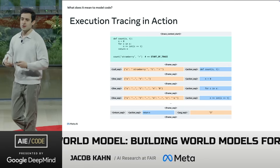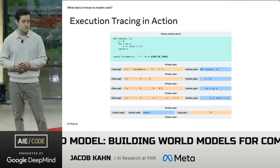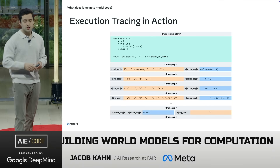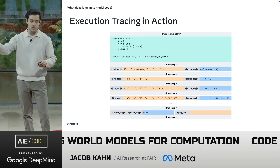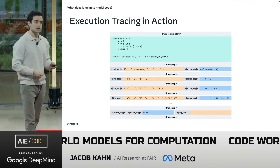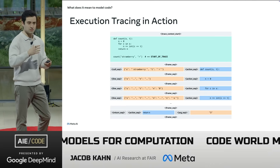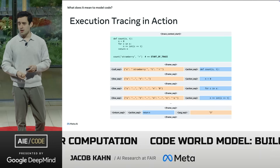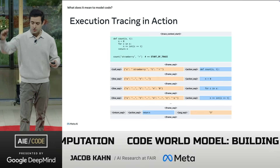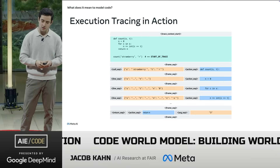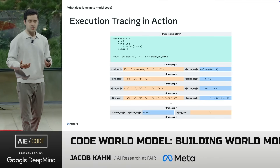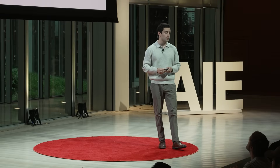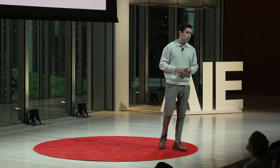Here's what execution tracing might look like in action. We have a program — we're going to count the number of R's in 'strawberry.' At each step, we'll have a frame separator denoting distinct lines of execution, and we'll explicitly track local variables. We could introduce things about memory in that trace, delineating line by line what's happening as our program executes. This is something we could feed to a model, because each line of our execution trace maps to a corresponding line in the program.